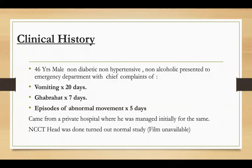The clinical history: a 46-year male, non-diabetic, non-hypertensive, non-alcoholic, presented to the emergency department with a chief complaint of vomiting for 20 days and ghabrahat for 7 days, and episodes of abnormal movements for 5 days. He came from a private hospital where he was managed initially for the same, and a non-contrast CT head was done that turned out to be a normal study.